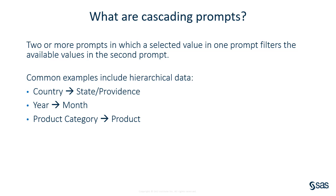This style of prompting is most often used with hierarchical data. In the first example, you would select a value for country and then that value would filter and display only the corresponding states or provinces for that country. In the second example, the user would select year and then filter and return only the months available from that data.